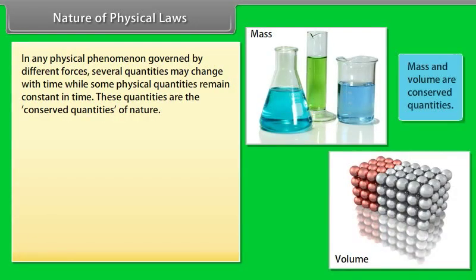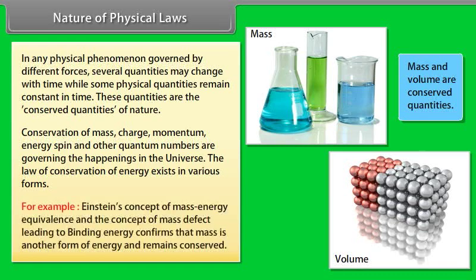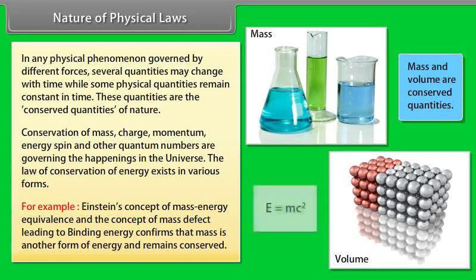Nature of physical laws. In any physical phenomenon governed by different forces, several quantities may change with time while some physical quantities remain constant in time. These quantities are the conserved quantities of nature. Conservation of mass, charge, momentum, energy, spin, and other quantum numbers are governing the happenings in the universe. The law of conservation of energy exists in various forms. For example, Einstein's concept of mass-energy equivalence and the concept of mass defect leading to binding energy confirms that mass is another form of energy and remains conserved.